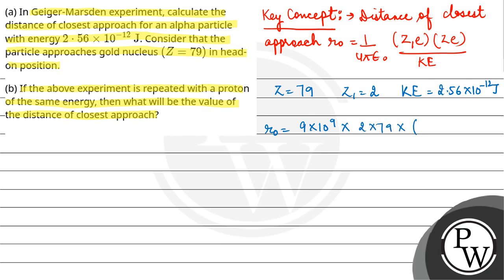R₀ = 9 × 10^9 × 2 × 1.6 × 10^-19 × 79 / (2.56 × 10^-12)